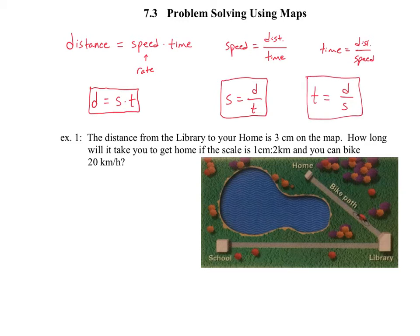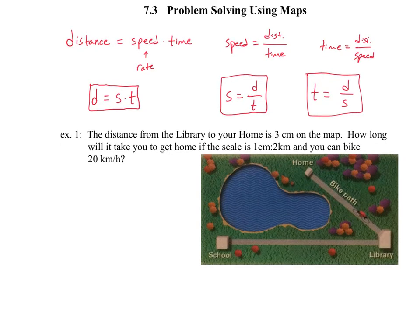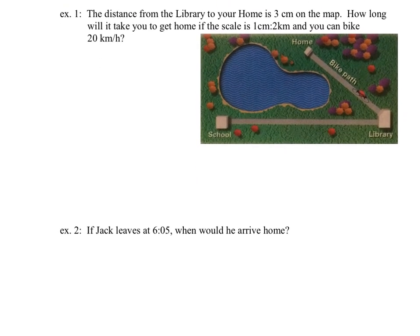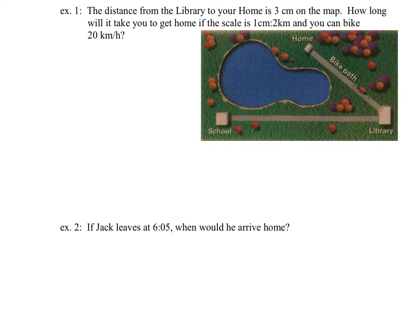Now let's go through and do some of these examples. Use those rulers that you got in class, the photocopied ones that are laminated. That'll come in handy as you do the homework. Example one: the distance from the library to your home is three centimeters on a map. How long will it take you to get home if the scale on the map is one centimeter equals two kilometers, and you can bike 20 kilometers per hour?